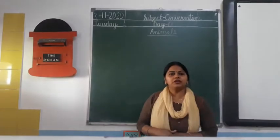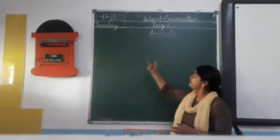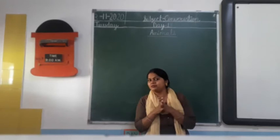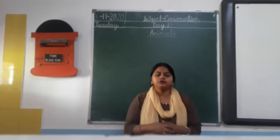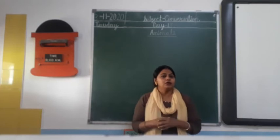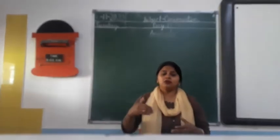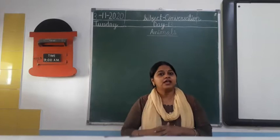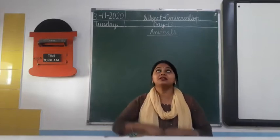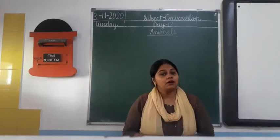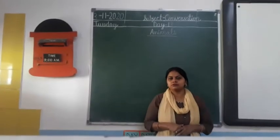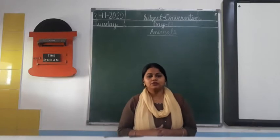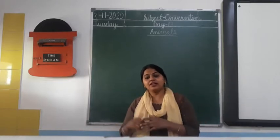Today we will do the conversation on the topic: animals. Around us we can see so many animals. If you go out of your home you can see many animals — on the street, on the road, or if you go on a trip or to the zoo. In the water you can see animals. In the sky you can see birds. You can also see some animals in your house, like a mouse or an ant.